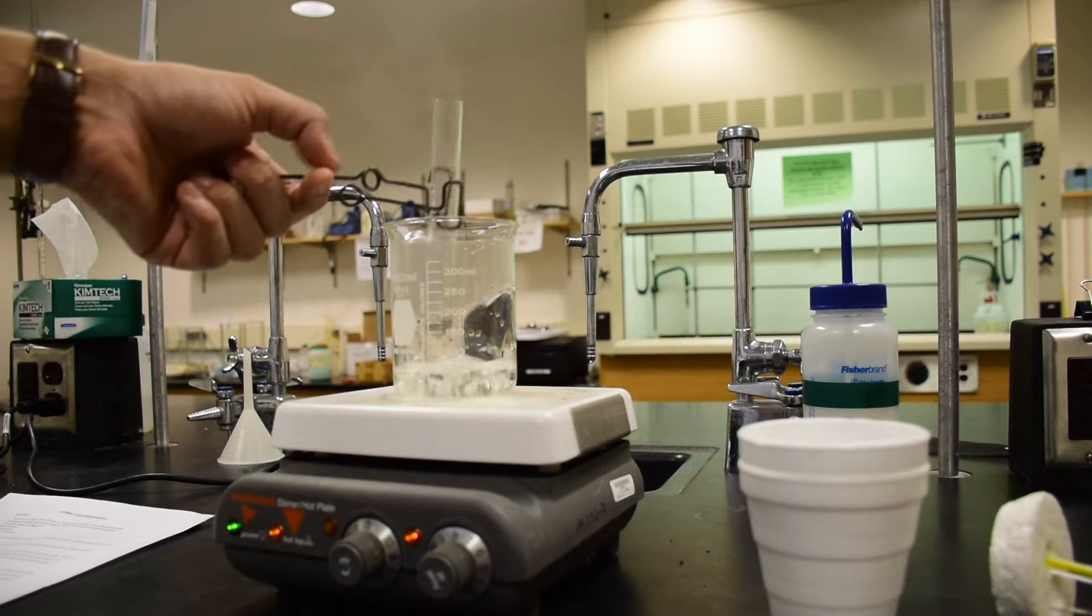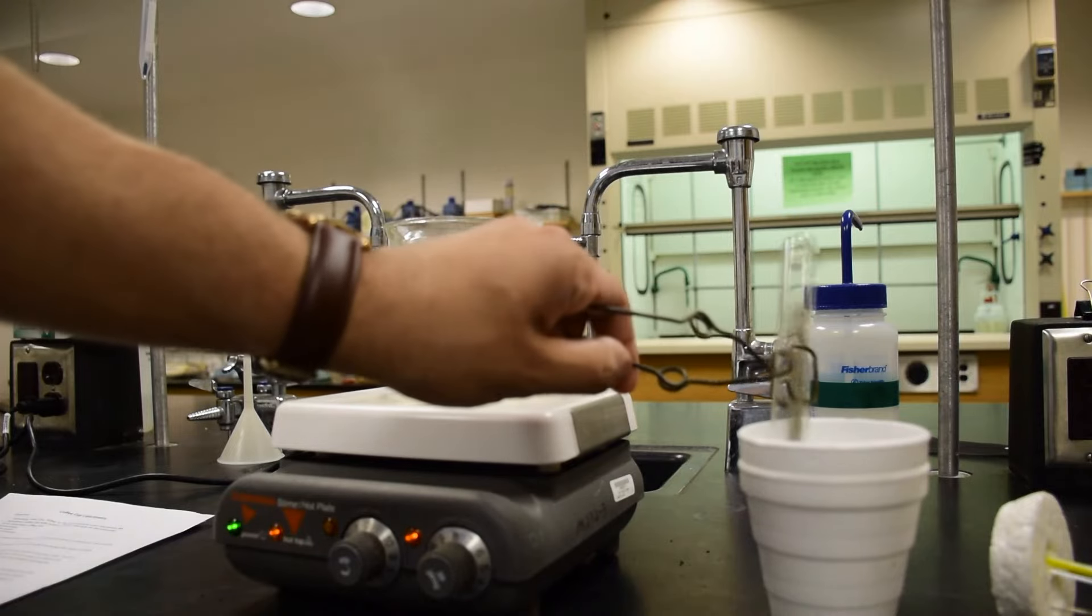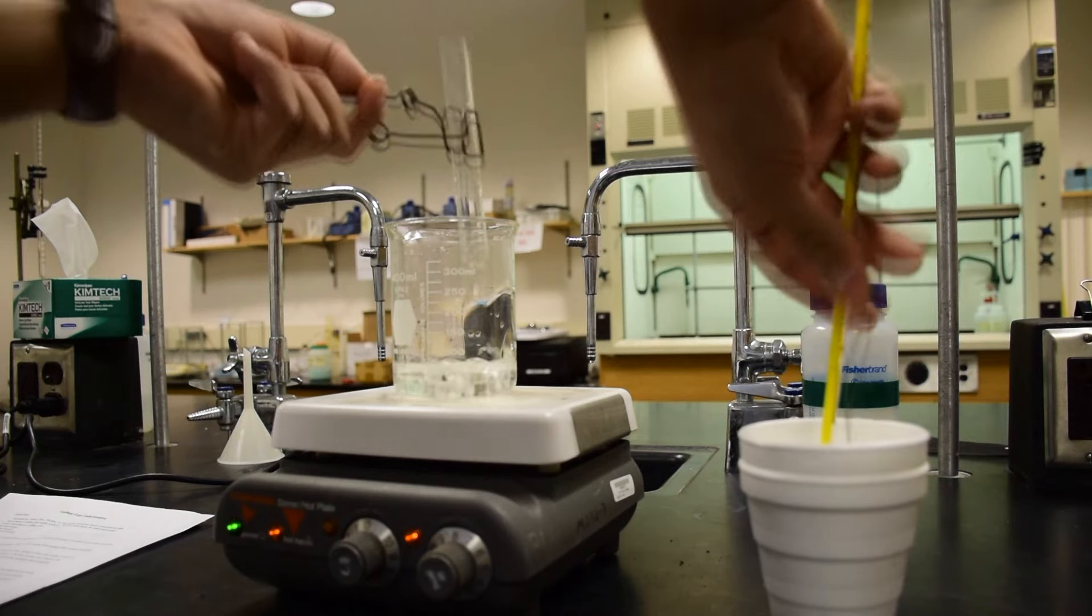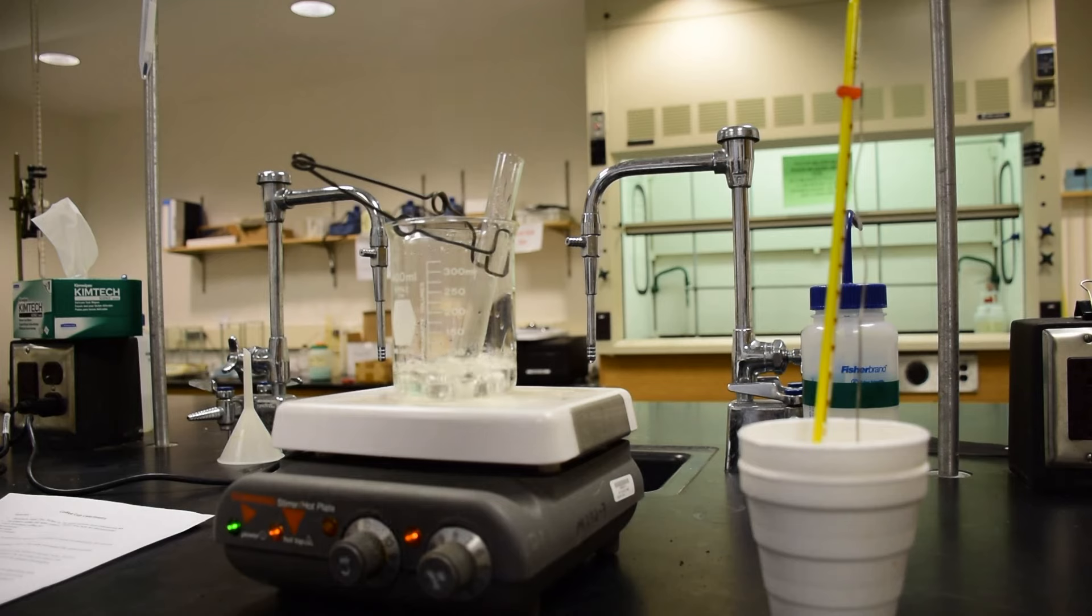Remove the test tube from the boiling water and transfer the metal out of the tube into the coffee cup calorimeter. Remember to do this quickly, otherwise the metal will quickly lose heat. Don't splash the water from the calorimeter and don't break the thermometer.